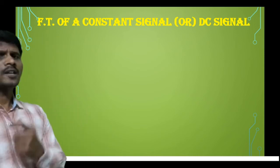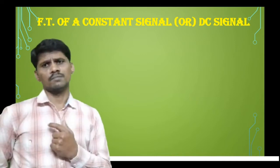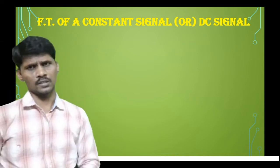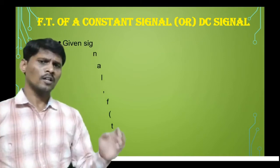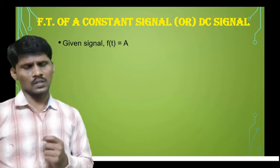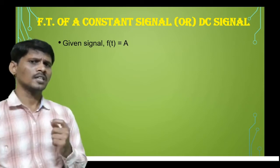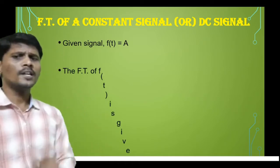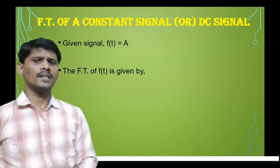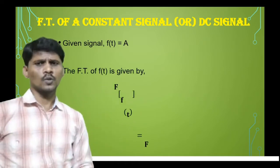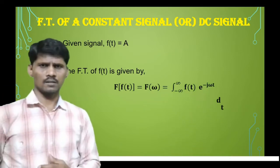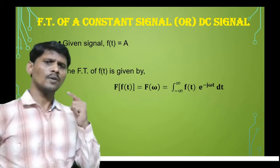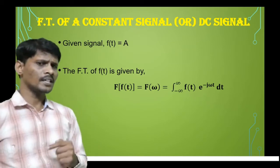The next topic is the Fourier transform of a constant function. The given signal x(t) is constant, specifically x(t) or f(t) equals capital A. We know that the Fourier transform of a signal is defined as F(ω) equal to the integral from minus infinity to infinity of f(t) into e to the power minus jωt dt.